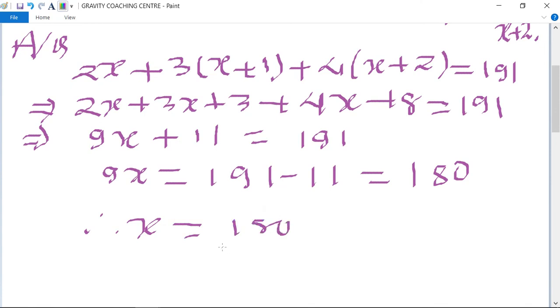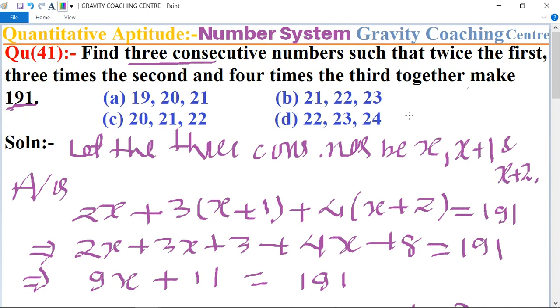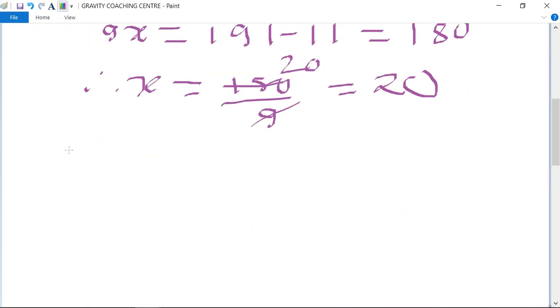So 180 divided by 9 equals 20. To find all three consecutive numbers: the first consecutive number is 20, and the second is x plus 1, which is 20 plus 1 equals 21.